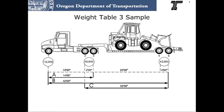The two most common heavy haul weight tables are what we call Weight Table 3 and Weight Table 4. This is an example of a combination that makes the weights allowed in Weight Table 3.